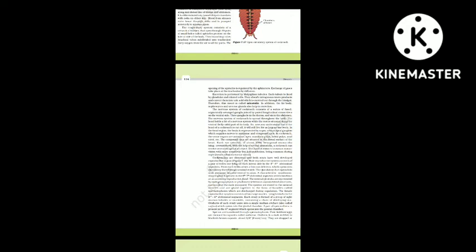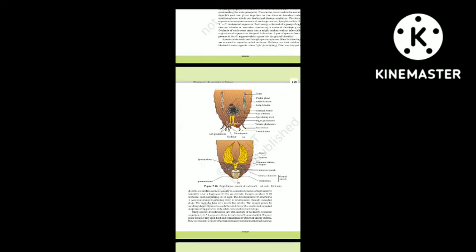The external genitalia are represented by male gonapophyses (phallomeres) — chitinous asymmetrical structures surrounding the male gonopore. Sperms are stored in the seminal vesicles and glued together in bundles called spermatophores, which are discharged during copulation. The female reproductive system consists of two large ovaries lying laterally in the 2nd to 6th abdominal segments. Each ovary is formed of a group of eight ovarian tubules (ovarioles) containing a chain of developing ova. Oviducts of each ovary unite into a single median oviduct (vagina) which opens into the genital chamber.